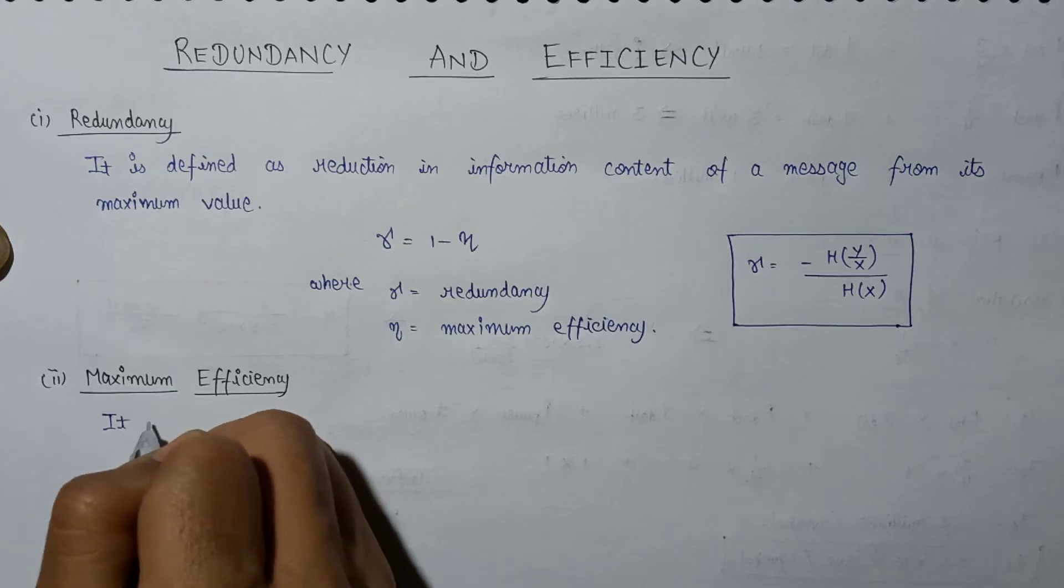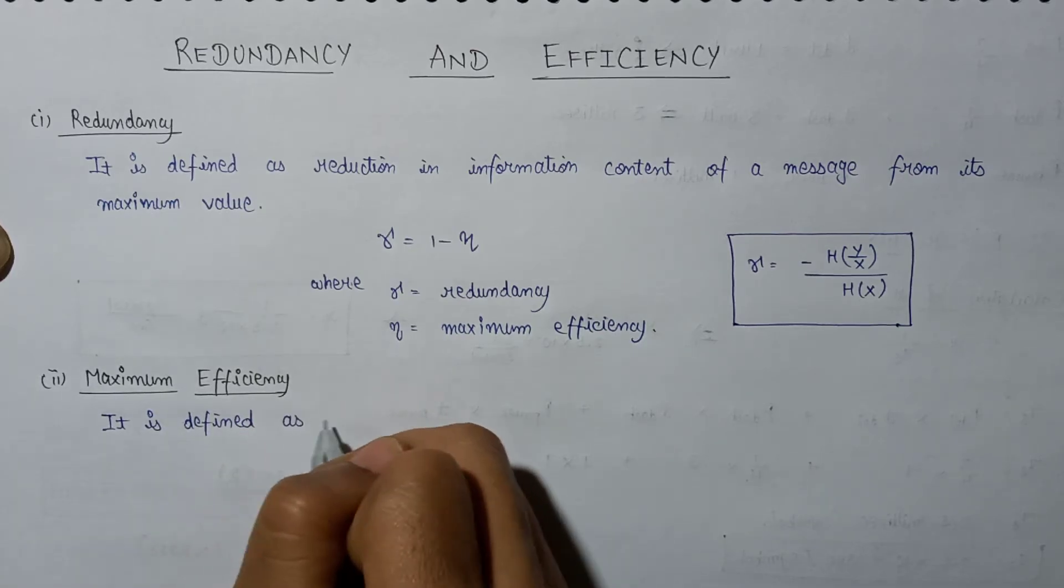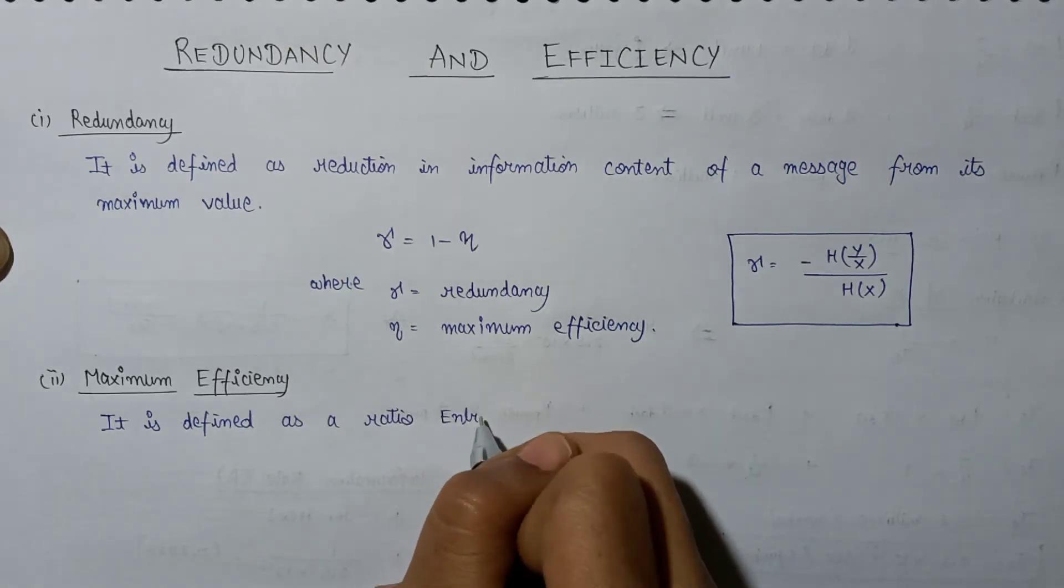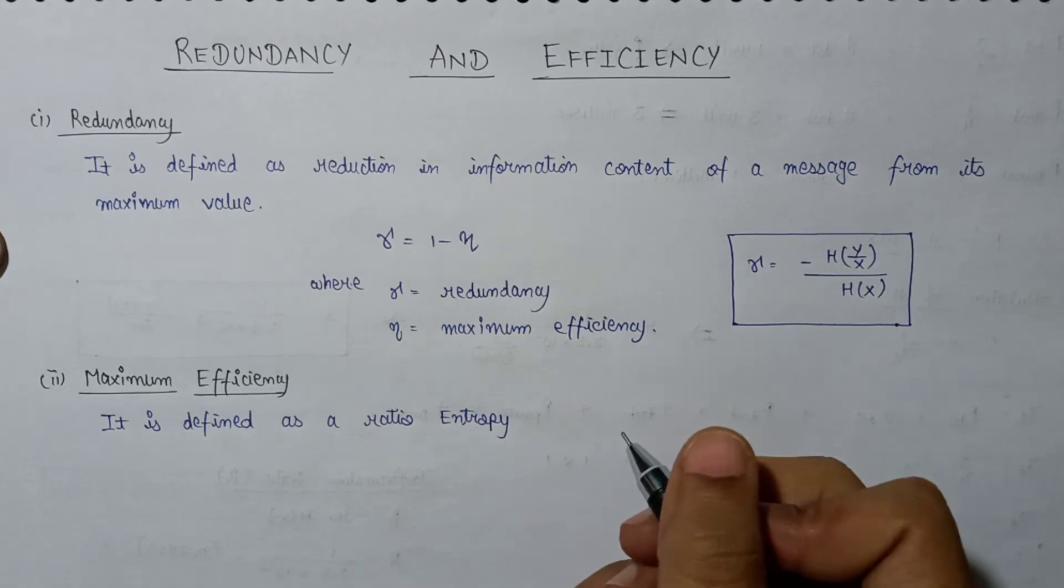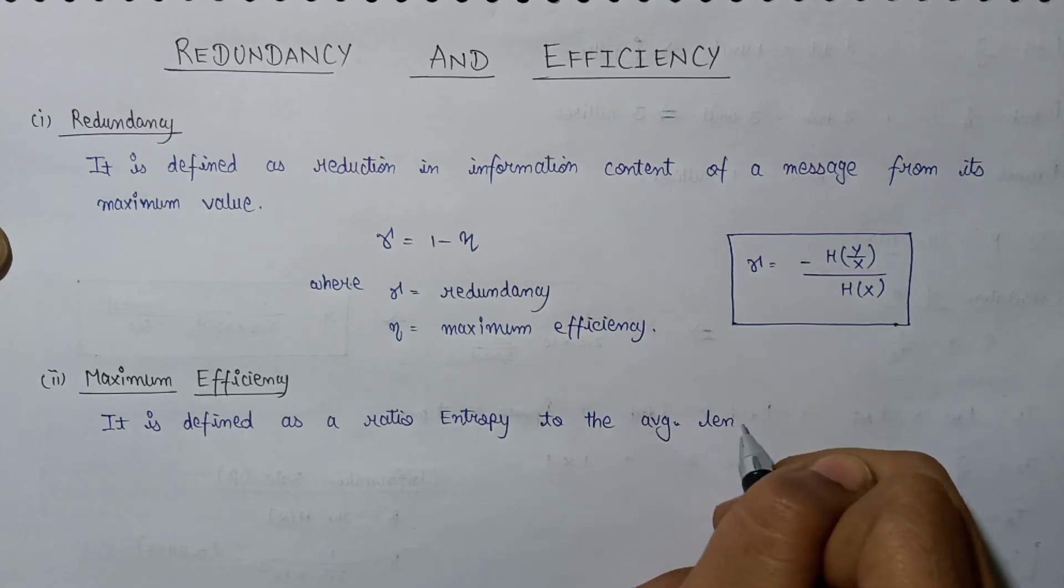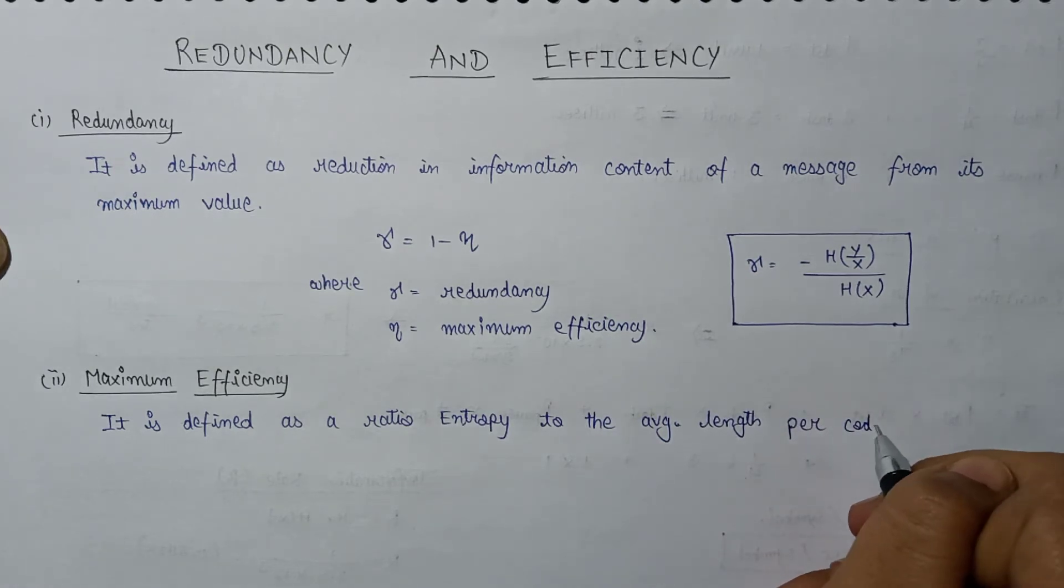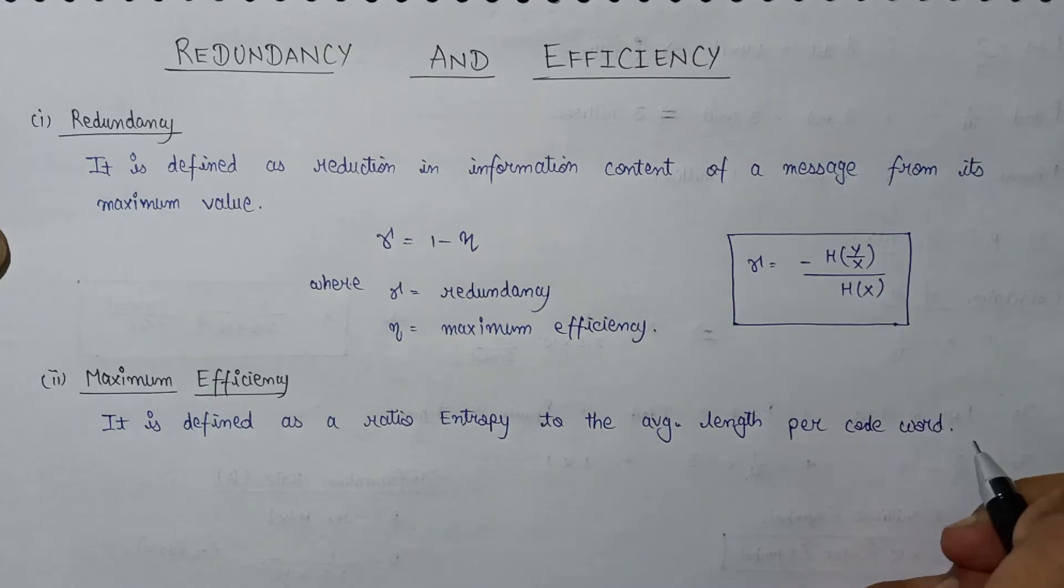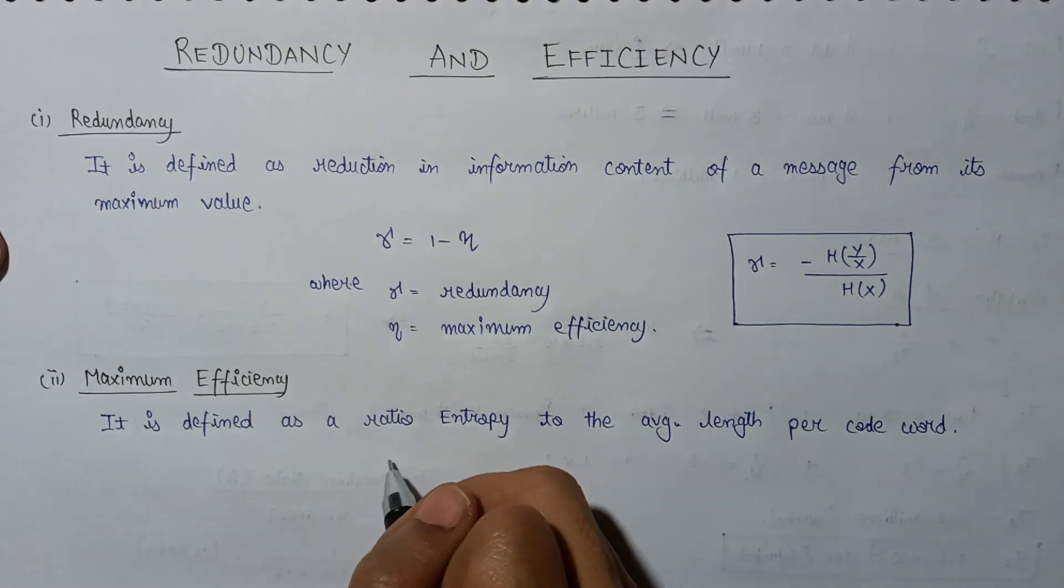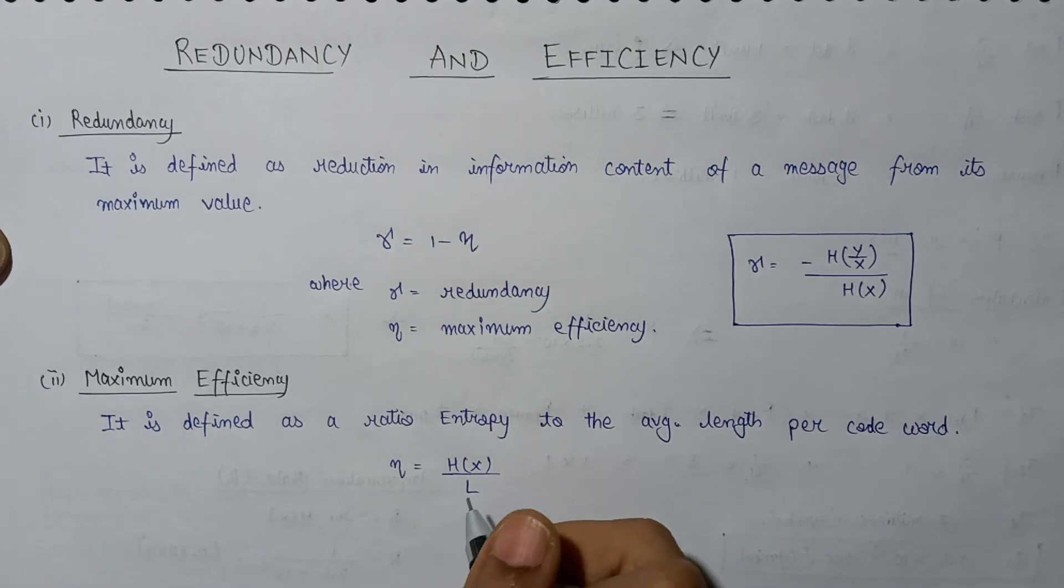It is defined as a ratio of entropy. This is the definition for maximum efficiency in mathematical expression terms, and it is given as H of X over L bar.